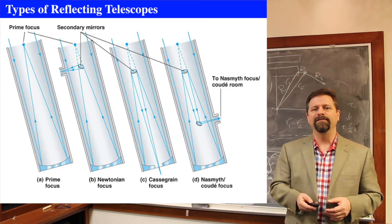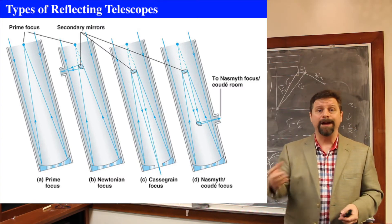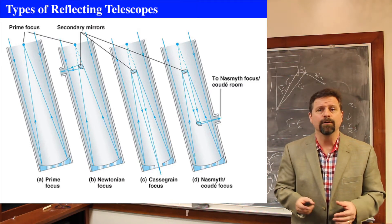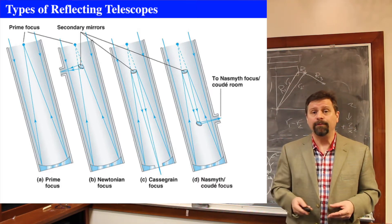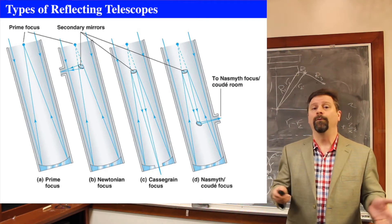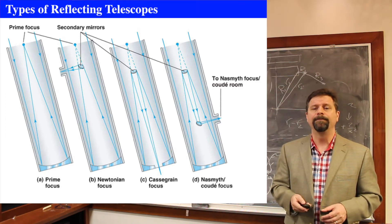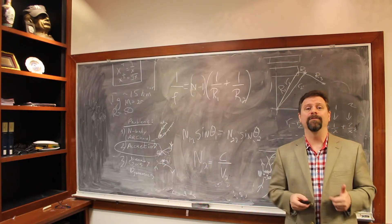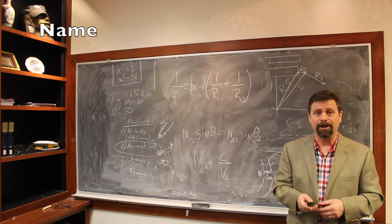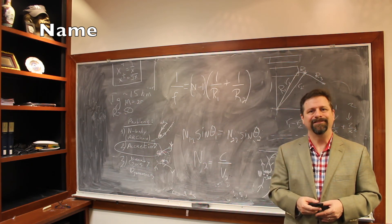The Nasmyth/Coudé focus is incredibly useful because the instrument doesn't ride the back of the mirror — it sits off to the side on a stable platform. As the telescope rotates, the instrument stays put. The telescope only has to handle pointing without carrying all the extra instrument weight. This is a very common configuration for major research telescopes. Next time I'll show you some of those major astronomical observatories. See you soon.